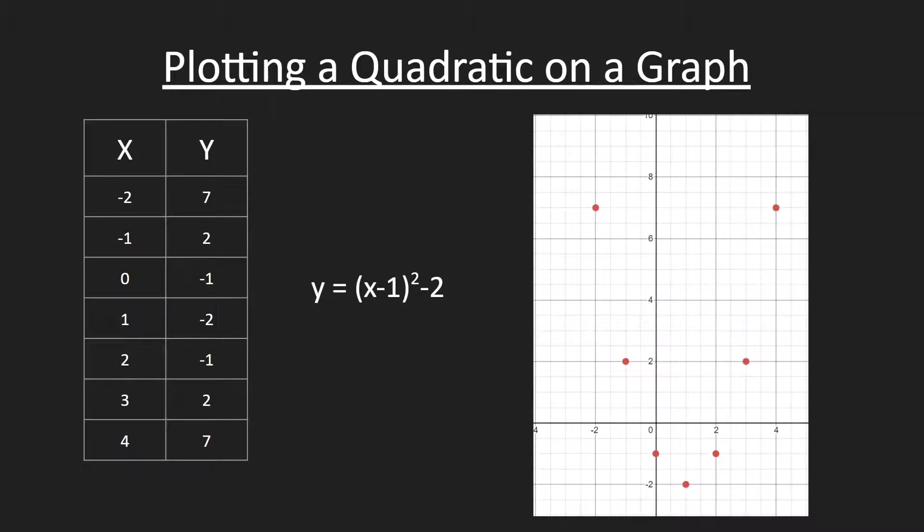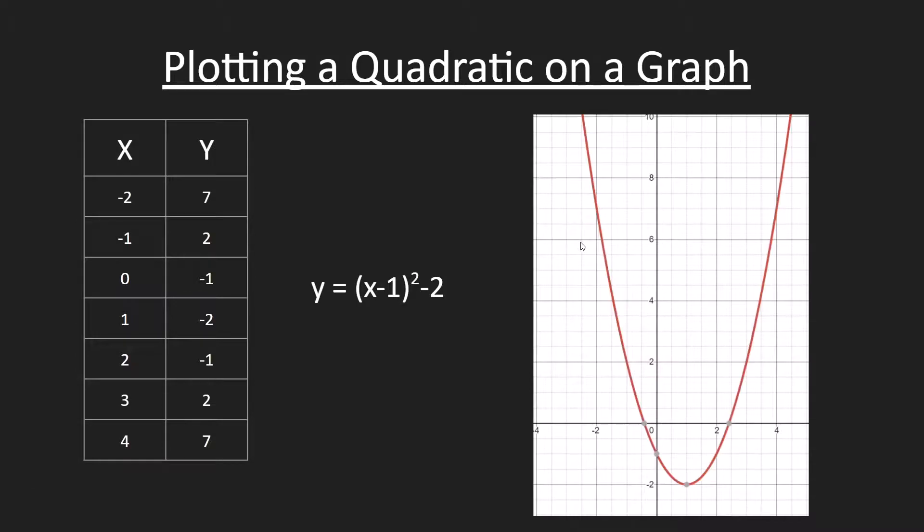We can see that we have this sort of U-shaped curve that will represent our graph. If we were to put every single possible x value between negative 2 and 4 into this equation, we would get this smooth curve, and that's what's known as a quadratic.